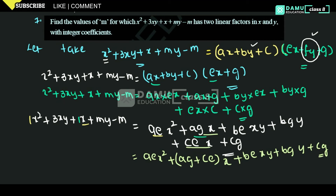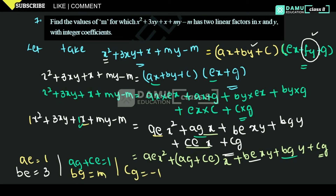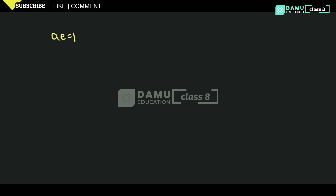Comparing all coefficients with x squared plus 3xy plus x plus my minus m, we get the system: ae = 1, be = 3, ag + ce = 1, bg = m, and cg = minus m.